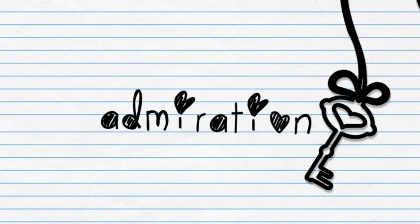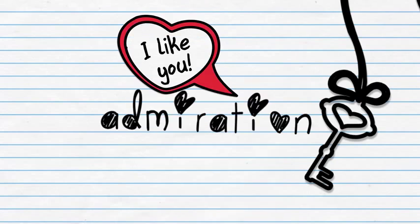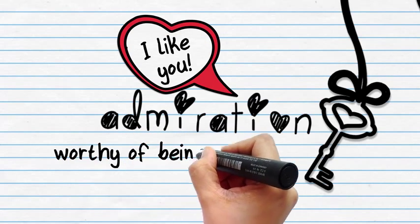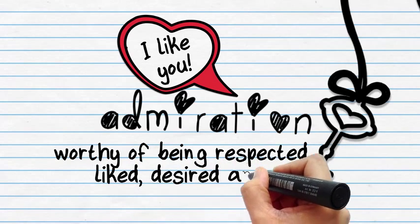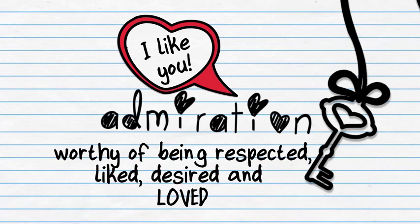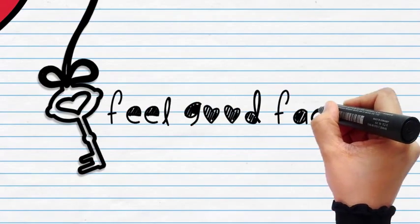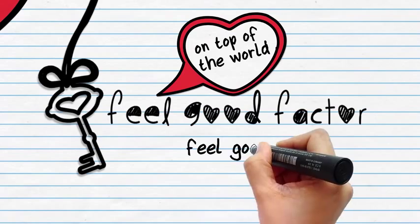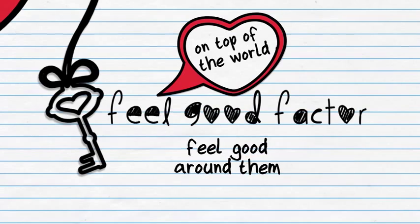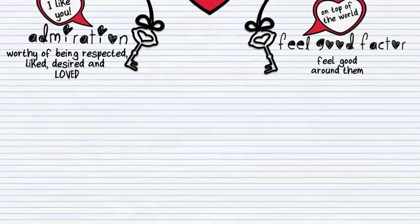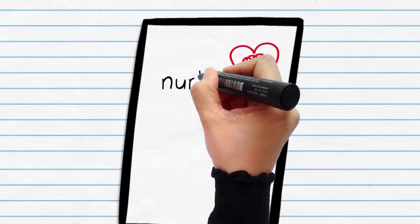The first key is admiration. You fall in love when you admire a person. When you consider the person worthy of being respected and thus liked, desired and loved. You also fall in love when you like the way they make you feel about yourself. You just feel good around them. Isn't this true? And this is exactly what you have to do in your marriage.